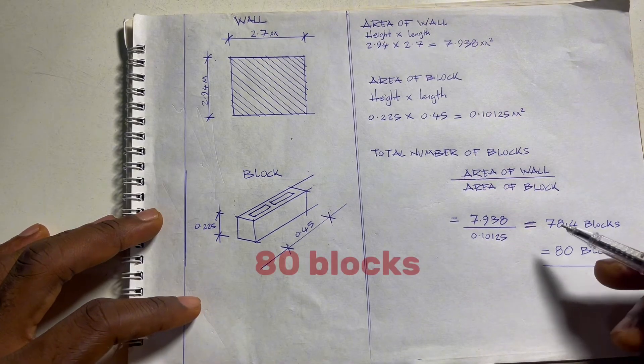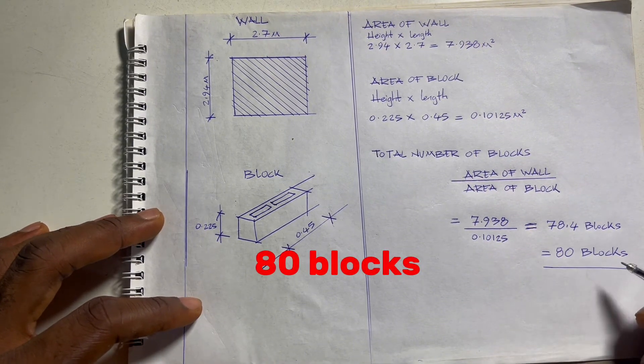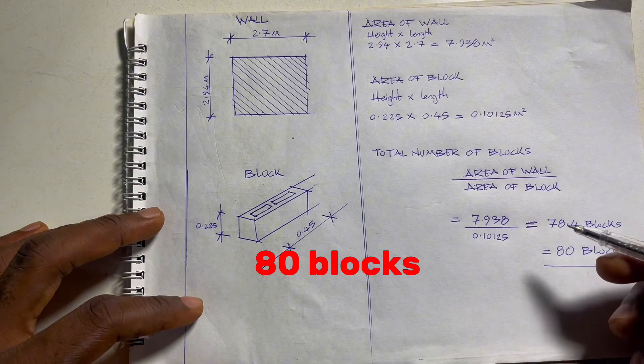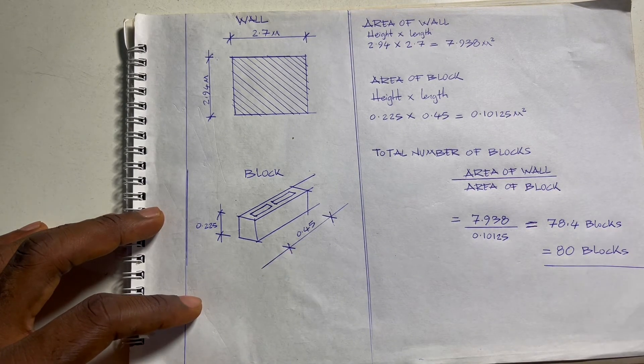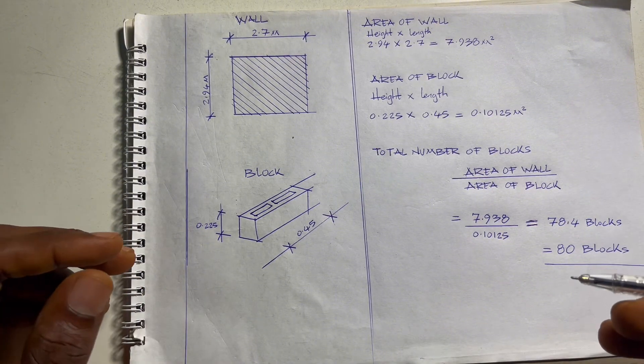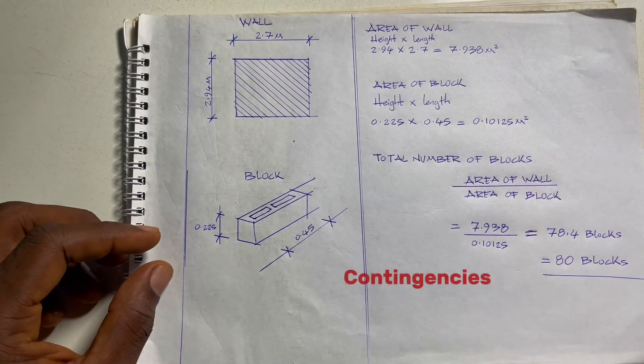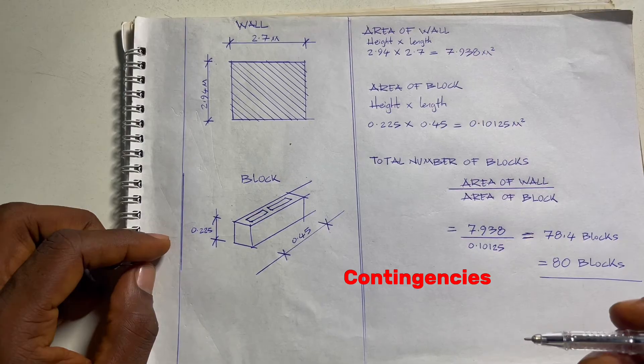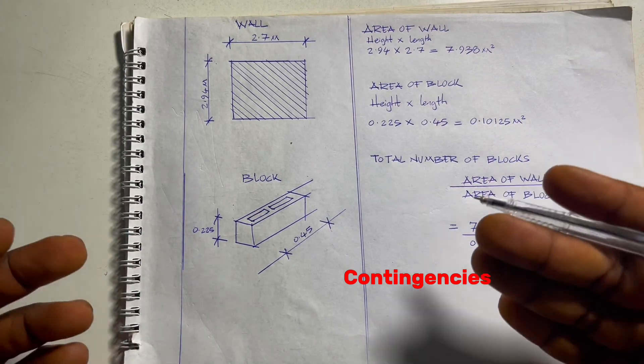We're going to round this up to 80 blocks because ideally we don't have anything like 78.4. We always have to anticipate for more blocks on site while doing the partition wall.